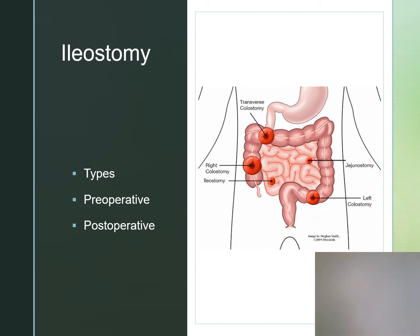The ileoanal reservoir can be performed for chronic ulcerative colitis and is done in two stages. We have a temporary ileostomy initially, and then about three months later the ileostomy would be reversed.